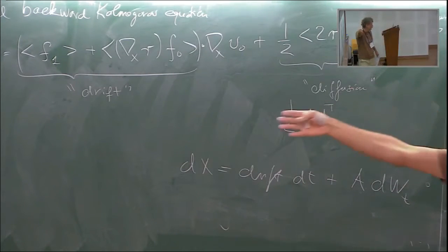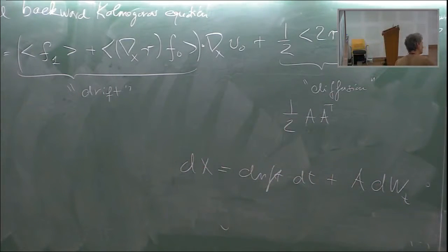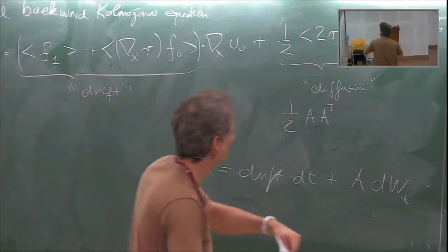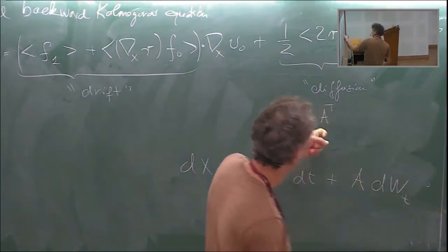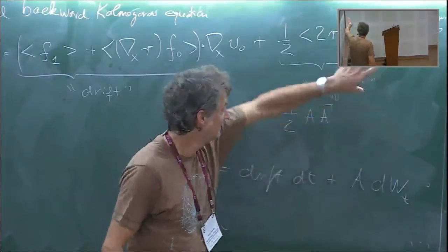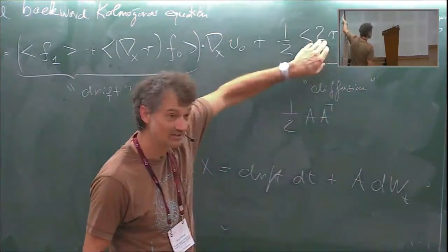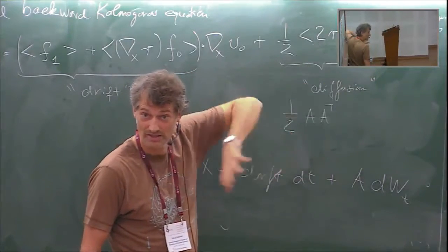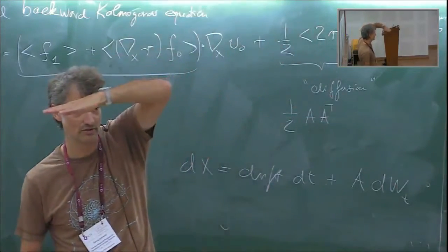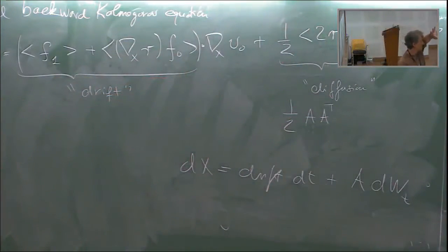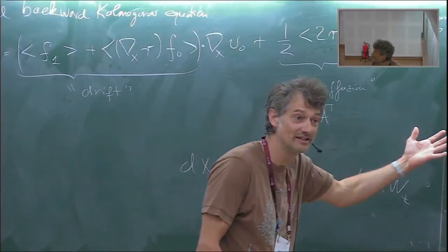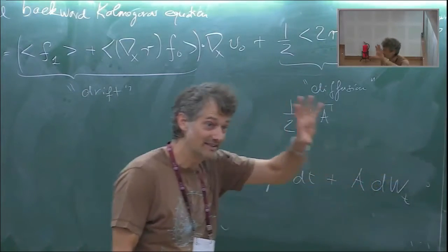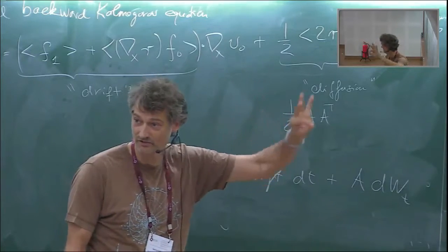Before, in the averaging equation, we were only interested in the mean. What we're trying to do now is recover the statistics — not just the mean but all moments behaving the same way. We can get different pathwise behaviors, but since AA^T is fixed, all SDEs give the same Fokker-Planck densities. The statistics are recovered, even though the fast variables are often unresolved and we have no information about their individual trajectories.